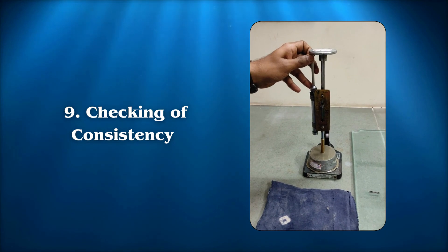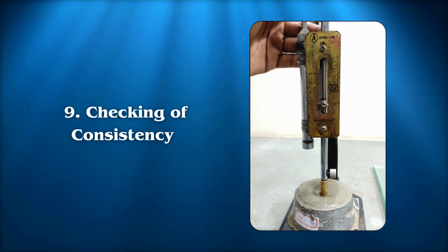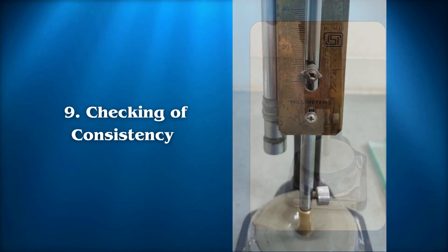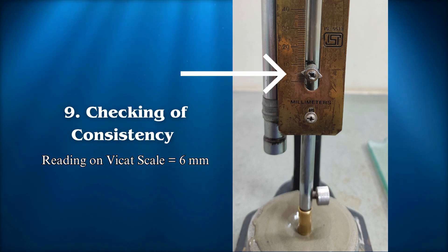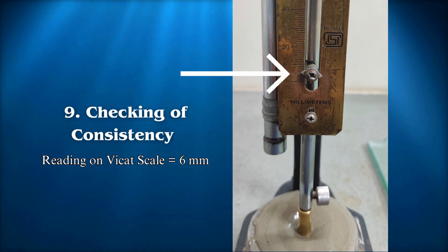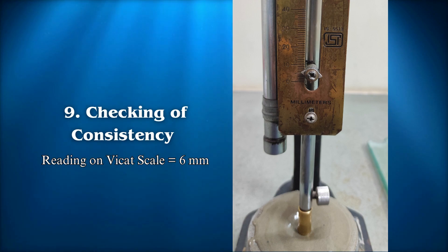At this point, take a reading. If the VCAT plunger penetrates to a depth of 5 to 7 millimeters from the bottom of the mold, the consistency test is achieved. If the result does not meet the standard consistency, adjust the water percentage and repeat the test until the VCAT plunger penetrates to a point 5 to 7 millimeters from the bottom of the mold.